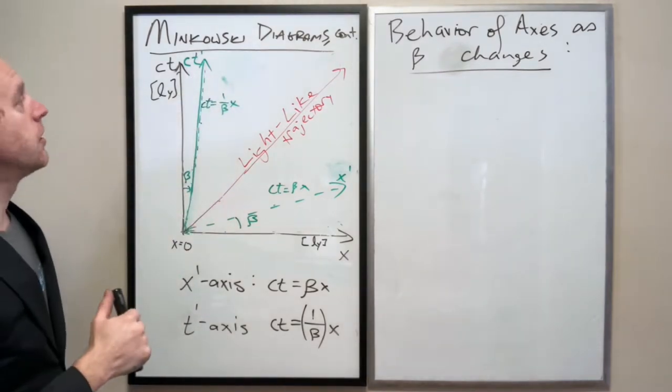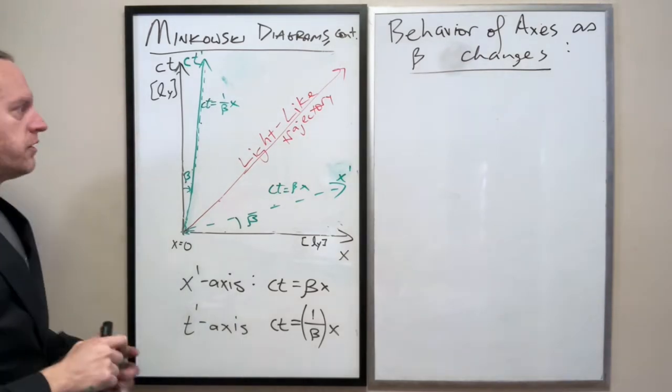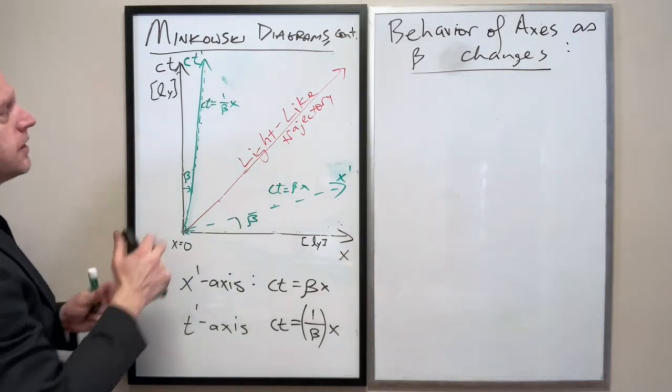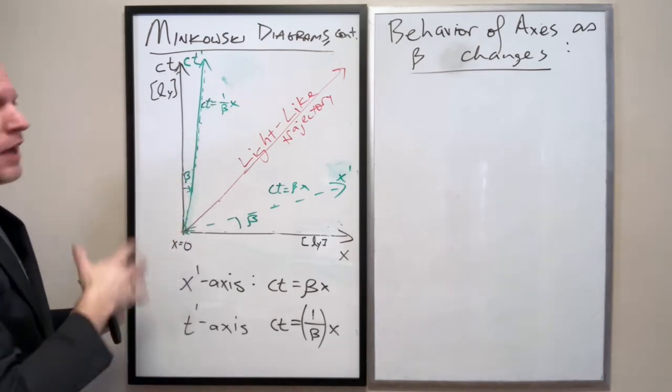So specifically, as beta changes, we know that this slope here, as beta increases...